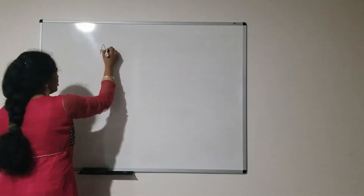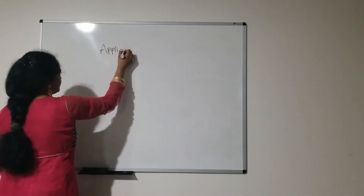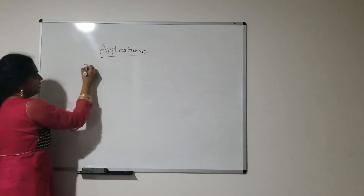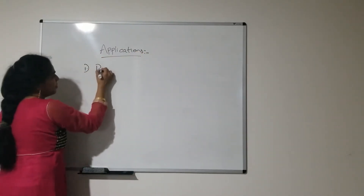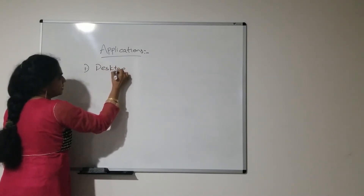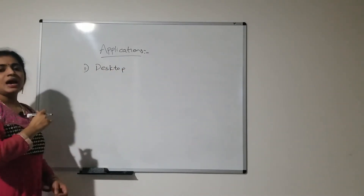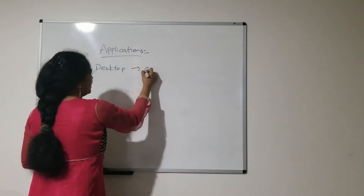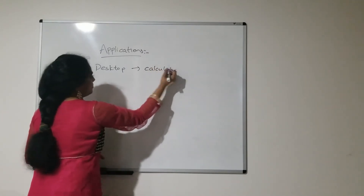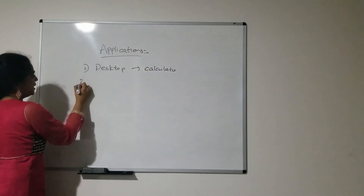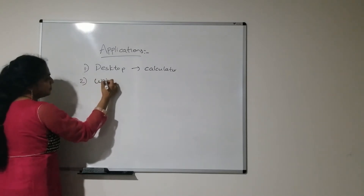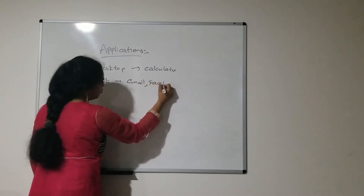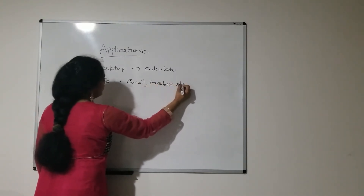Next, coming to applications of Python. The first one is desktop applications. Desktop applications means applications which are running in a single system, that is a standalone system. The best example for a desktop application is a calculator. And the next one is web applications — Gmail, Facebook, Yahoo — all these come under web applications.